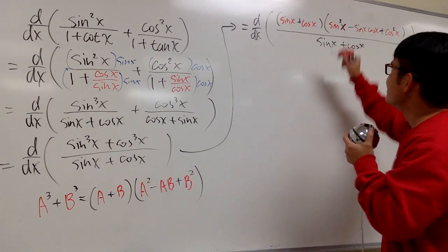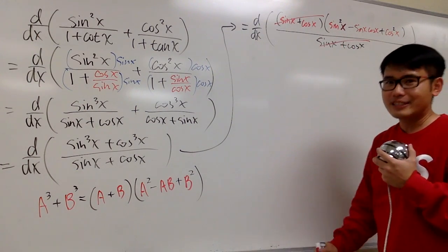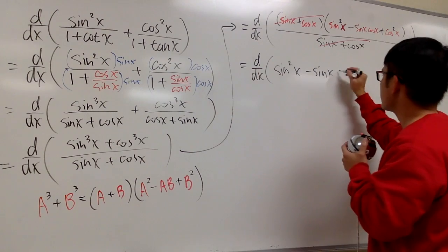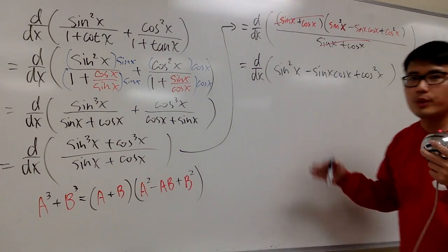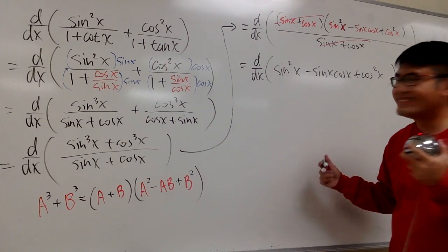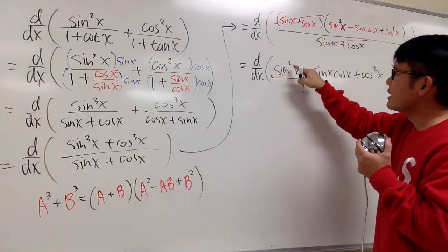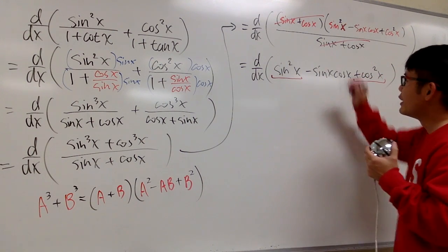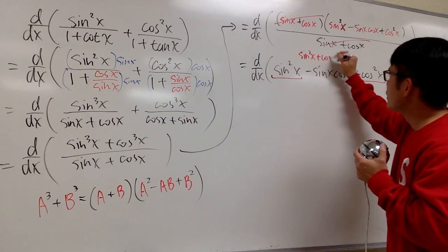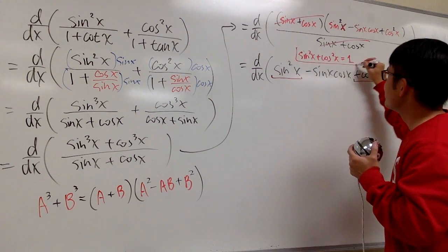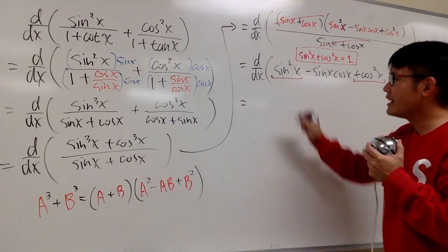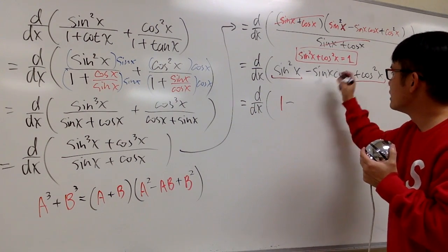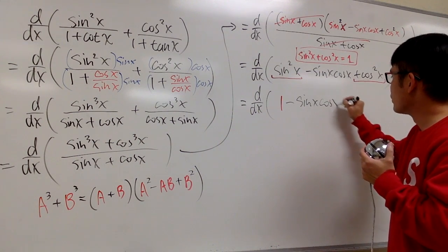Now we can cancel sine x plus cosine x from the numerator and denominator. We're left with d/dx of: sine squared x minus sine x cosine x plus cosine squared x. Notice that sine squared x plus cosine squared x equals 1 by the Pythagorean identity, so this simplifies to d/dx of 1 minus sine x times cosine x.